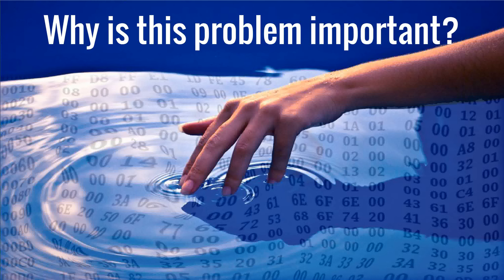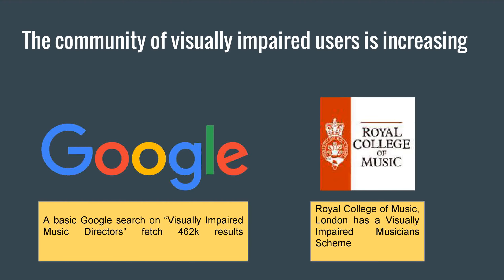So why is this problem important? Search results on Google and the scheme at Royal College of Music show that visual impairment has not kept people away from producing music. For them to compete at the same level with sighted users, things need to be made easier for them.